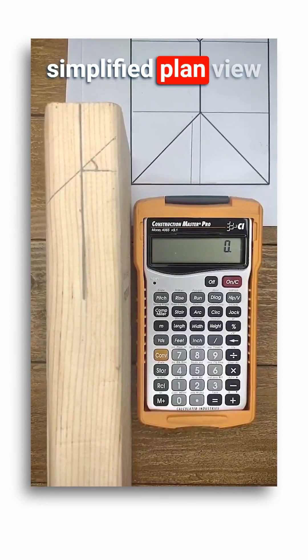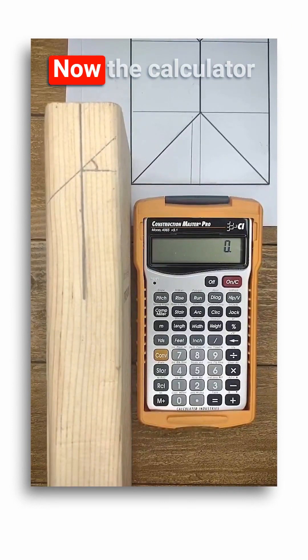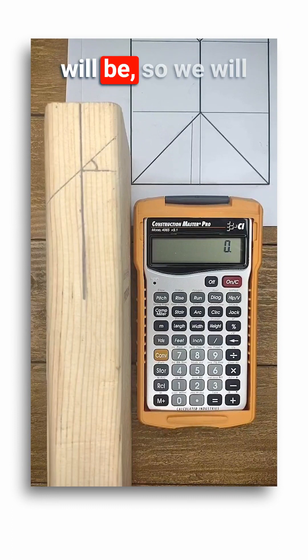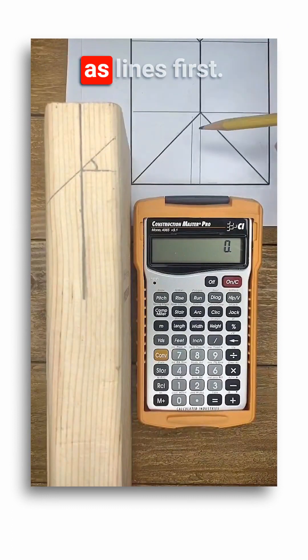Let's start with a simplified plan view drawing of a hip roof. Now the calculator doesn't know how thick the framing lumber will be, so we'll visualize everything as lines first.